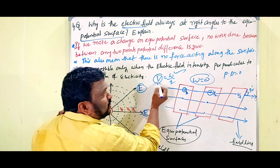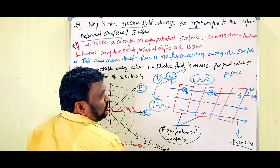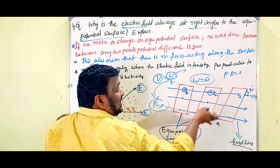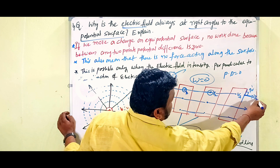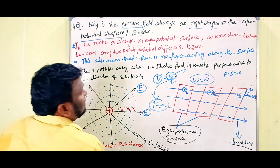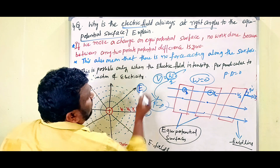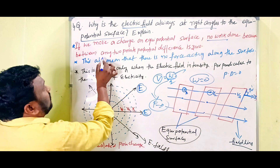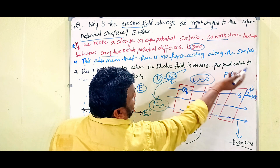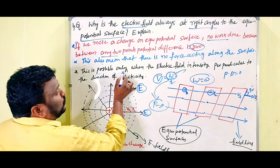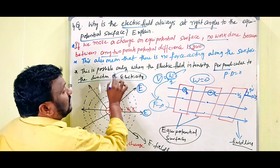If the potential difference is zero, the work is also zero. V equals W by Q, so if V is zero then W is also zero. And if work is zero, force is also zero. That is why if we move a charge on an equipotential surface, there is no work done because between any two points the potential difference is zero. This also means there is no force acting along the surface. This is possible only when the electric field intensity is perpendicular to the equipotential surface.